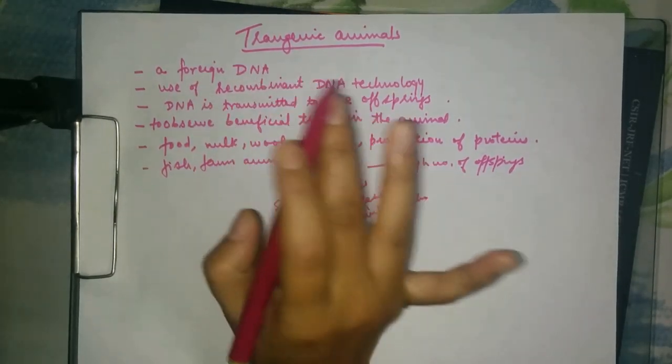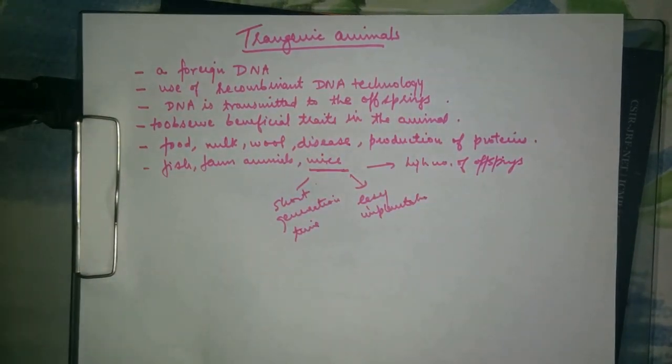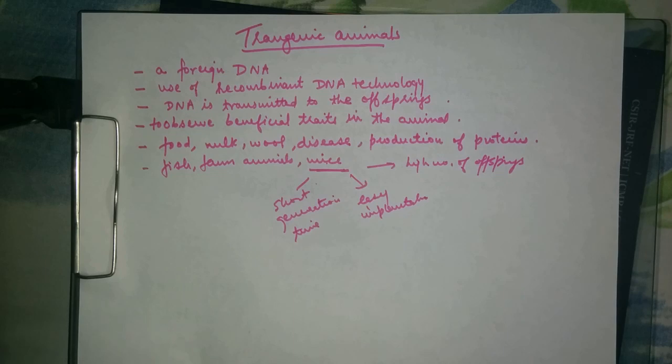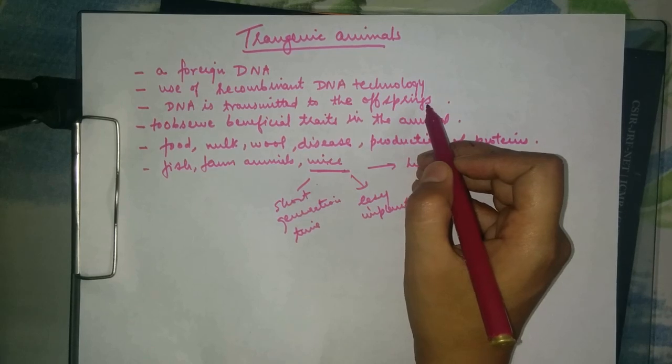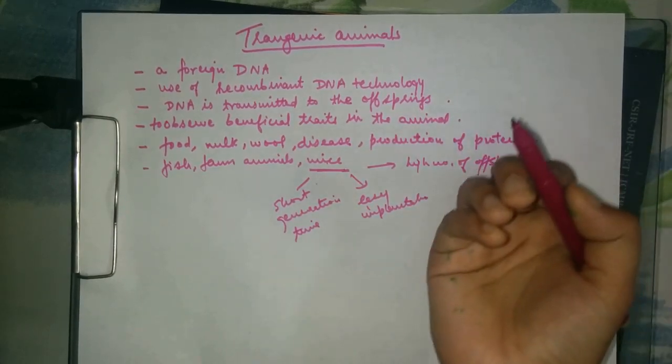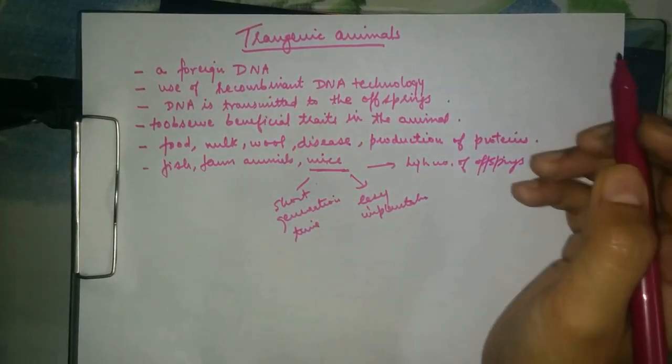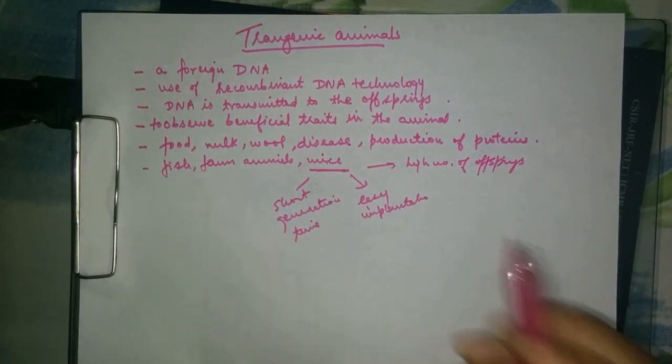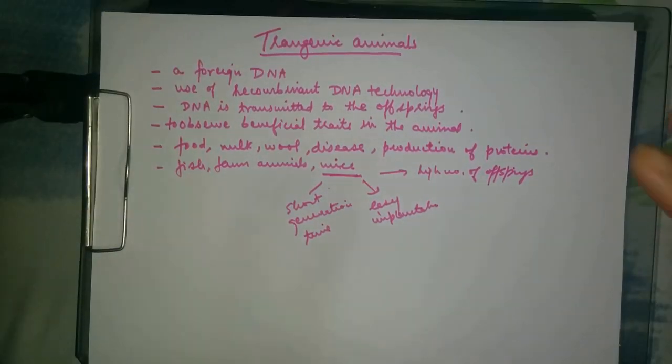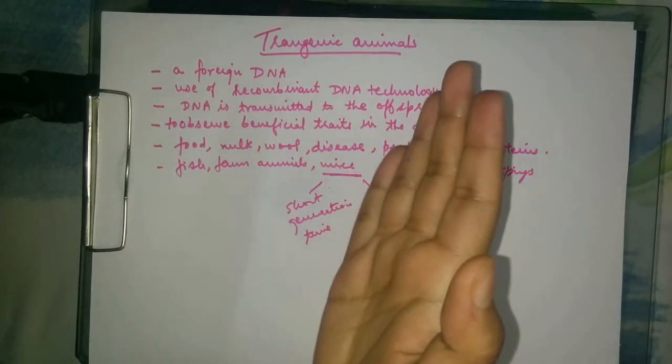A transgenic animal is an animal in which a foreign gene has been inserted. Foreign DNA is introduced into the animal using recombinant DNA technology, and then it must be transmitted through the germline so that every cell, including the germ cells of the animal, contains the same modified genetic material.